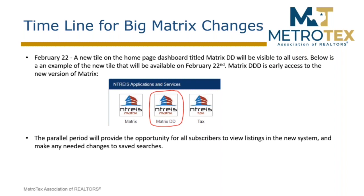These timelines are very important. Starting on February 22nd, you're going to see a new tile on the homepage dashboard titled Matrix DD — DD stands for Data Dictionary. It's going to be visible to all users. Here's an example in the middle of your screen of what that will look like. You'll have your normal Matrix tab and then you'll have your Matrix DD. The DD is the new system, and this parallel period gives you an opportunity to go in and look at your listings in the new system to get familiar with the searches and see what's different.